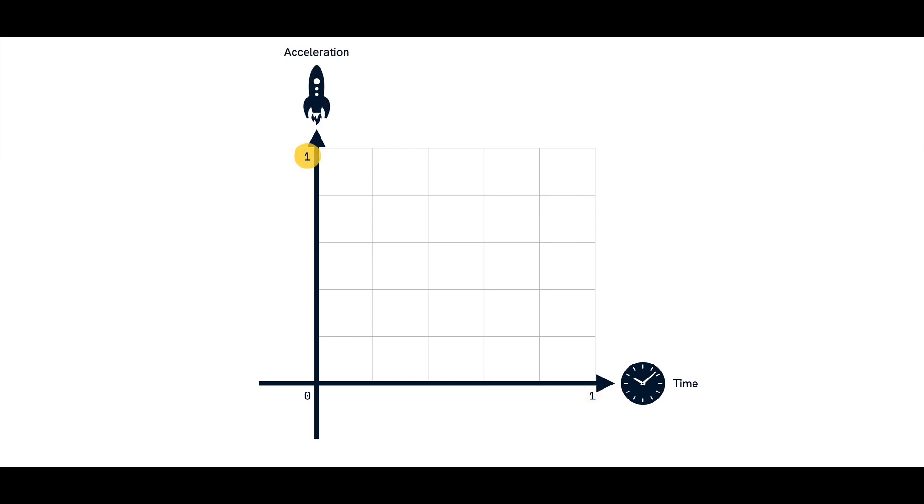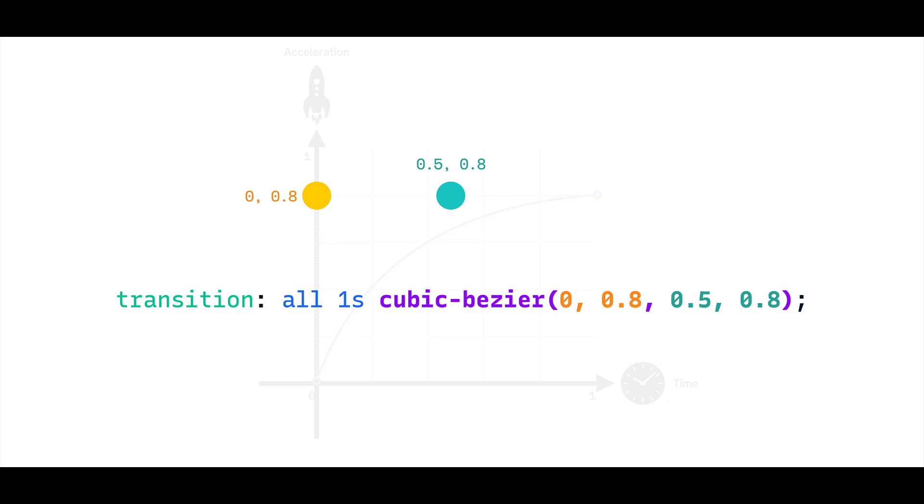The vertical y-axis is our acceleration or motion, hence the term animation timing function. Once we have our time acceleration graph, we can plot curves and lines to visualize this motion.